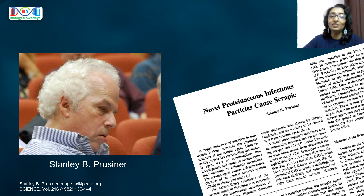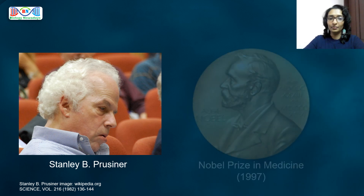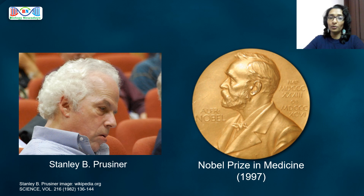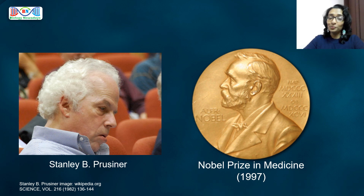All of them contain nucleic acids, but later more and more evidence came up supporting Prusiner's work. In 1997, he was awarded a Nobel Prize in medicine for his discovery of an entirely new group of disease-causing agents: prions.